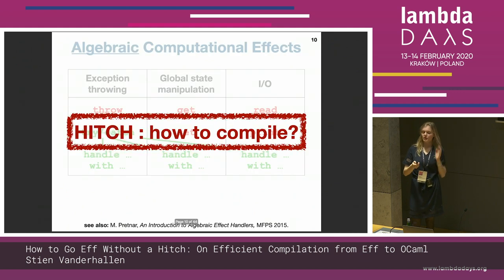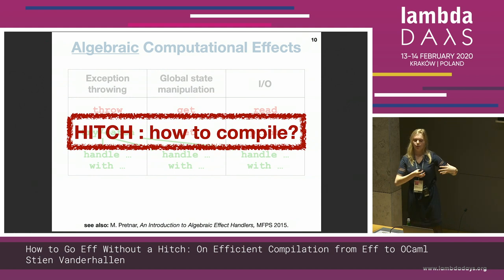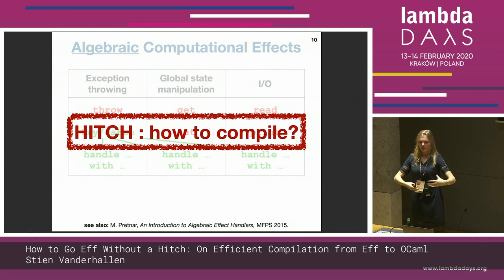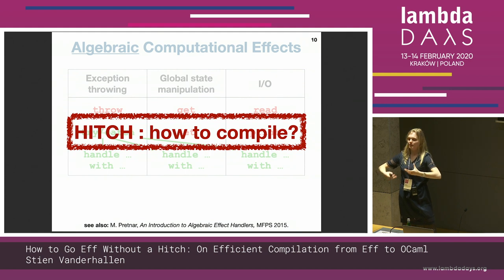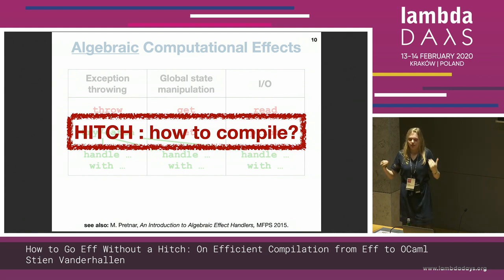But now here's our hitch — how do we compile such things? How do we deal with both the operations which cause the effectful behavior and then the handlers that do something with it? They capture it and then do some computation to handle these effects.